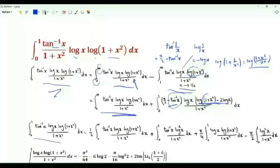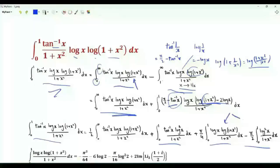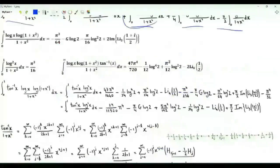The integral of interest is 1/2 times the integral from 0 to infinity which is known, plus three additional integrals. The good news is that two of these were obtained in previous videos. We now focus on the remaining one: the integral from 0 to 1 of the inverse tangent of x times the square of log x over 1 plus x squared.